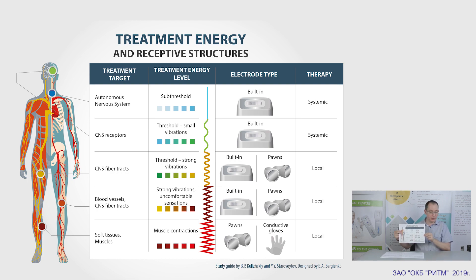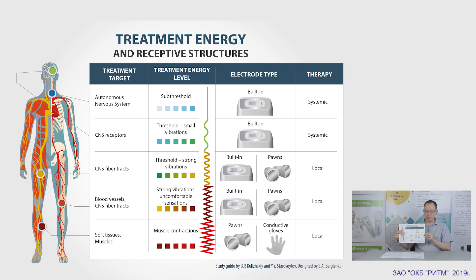The upper threshold level influences the pathways of the central nervous system and can be used for conducting-type mild stimulation, the treatment of nerve roots and plexus, as well as for local anti-edemic, anti-inflammatory, and anti-pain therapy. At this level, we can use both built-in and external electrodes.